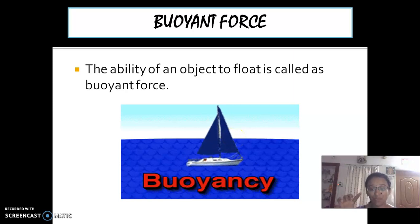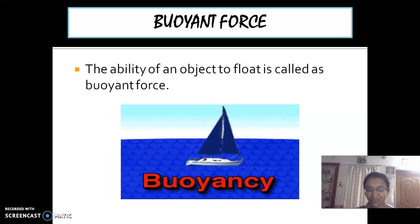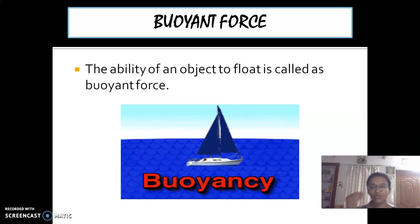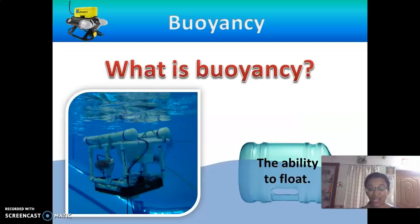Why does a ship float in water, but why does an iron nail sink? Many of you gave the correct answer — it is due to density. The density of the iron nail is higher. So this theory is related to the Archimedes principle. The ability to float is called as buoyant force.